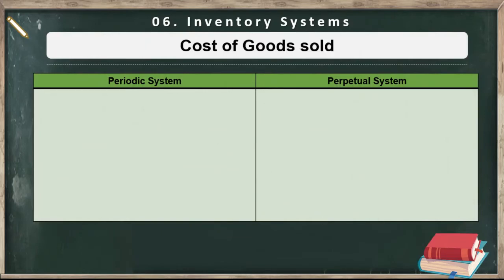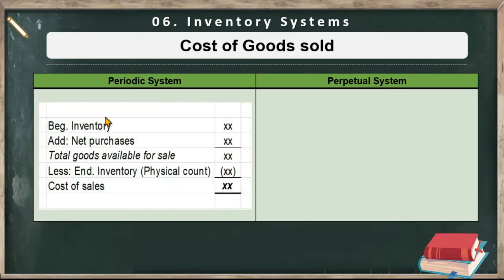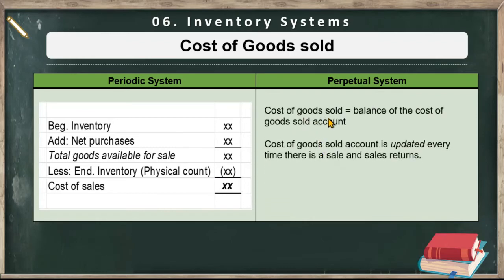For the cost of goods sold computation: under the periodic system, you must compute it. You determine beginning inventory, then add net purchases — which is purchases minus purchase returns minus purchase discounts minus purchase allowances plus freight in — to get total goods available for sale, then deduct the physical count ending inventory. That's why physical counting is important to determine cost of sales. Under the perpetual system, the cost of goods sold equals the balance of the cost of goods sold account, which is updated every time there is a sale or sales return.